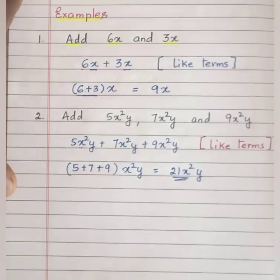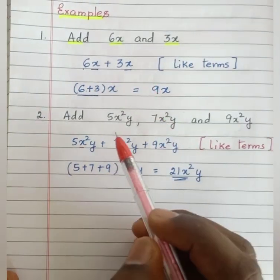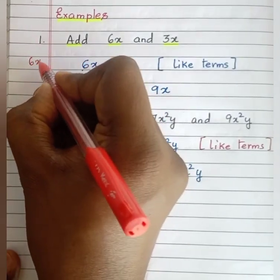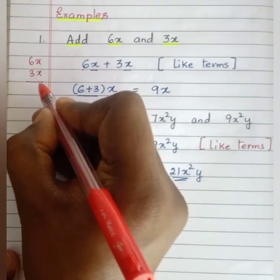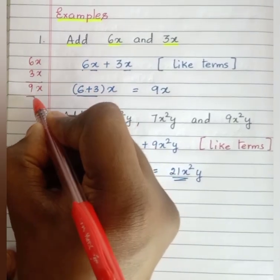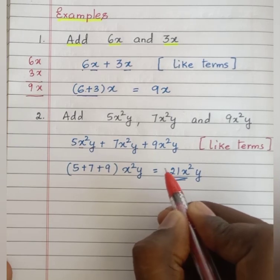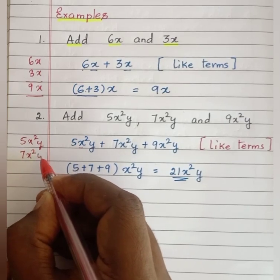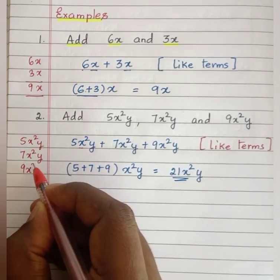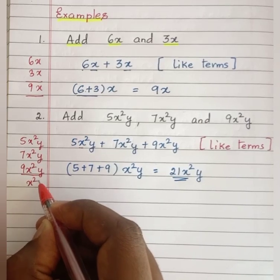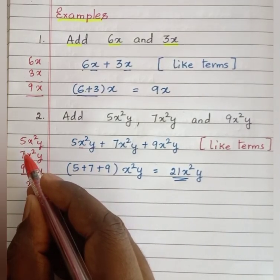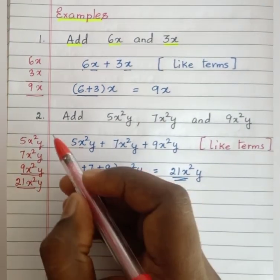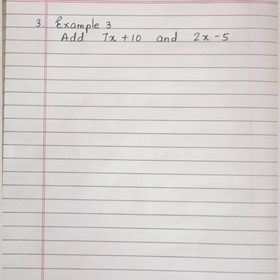Hopefully you have understood this. We can also solve this in one more method — that is, by vertical addition. For 6x plus 3x: write the variable x as it is, and 6 plus 3 gives 9x. Similarly, for 5x²y, 7x²y, and 9x²y: write the variable x²y as it is and add 5 plus 7 plus 9 to get 21. This is the vertical way of adding the terms.